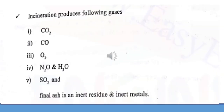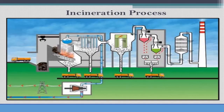Incineration produces different types of gases such as carbon dioxide, carbon monoxide, oxygen, water, and sulfur dioxide. However, the final ash is always an inert residue or inert material. Therefore, we can sterilize the waste and it will also cause less harm to the environment.